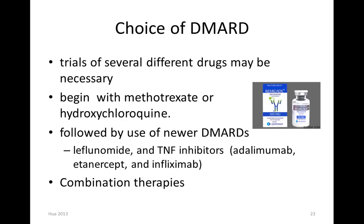What choice of DMARDs to use? Usually the rheumatologist will try different drugs and maybe different combinations, typically beginning with methotrexate or hydroxychloroquine, followed by the newer immunosuppressants such as leflunomide or tissue necrotic factor inhibitors — those antibody-type drugs. Usually when you see -mab at the end it's an antibody drug, a monoclonal antibody (MAB), or combination therapy is often used.